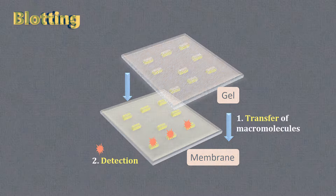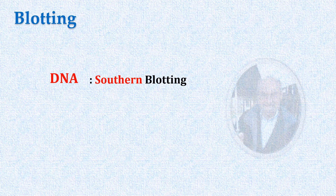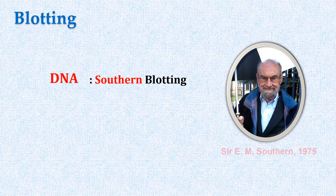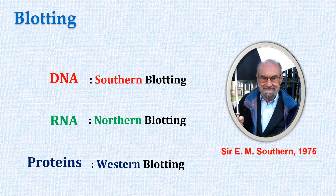When the macromolecule involved is DNA, the technique is known as Southern blotting. Southern is the last name of the scientist who first blotted DNA — Sir Edwin Mellor Southern. By analogy, blotting involving RNA is known as Northern blotting, and for protein, this technique is known as Western blotting.